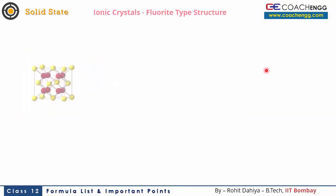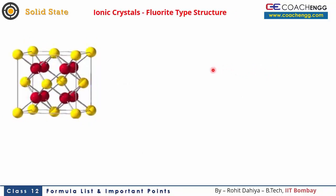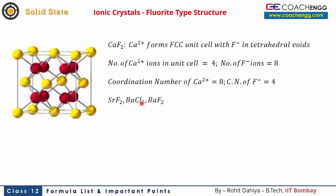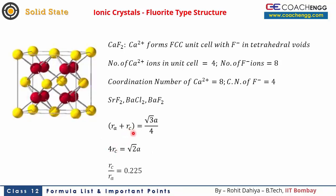There is also the fluorite type structure, representing CaF₂ (calcium fluoride). Here Ca²⁺ ions form the FCC unit cell (being larger), and F⁻ ions are placed in all tetrahedral voids. For each calcium there are two tetrahedral voids, so per unit cell: 4 Ca²⁺ and 8 F⁻. Coordination number of Ca²⁺ is 8 and of F⁻ is 4. Other examples include SrF₂, BaCl₂, and BaF₂. The geometry: r_A + r_C = (√3 × a)/4 and 4r(cation) = √2 × a, giving r_A/r_C = 0.225, confirming tetrahedral voids are filled by F⁻.